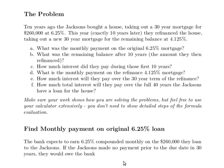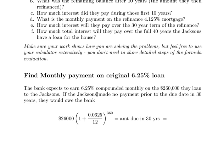Let's imagine that the Jacksons don't make any payment at all until the very end of the 30 years. The money is going to be compounding interest during those 30 years, and we'd like to identify how much they would owe if they only make one payment at the end of 30 years. That's a compound interest problem, so we're using the compound interest formula.